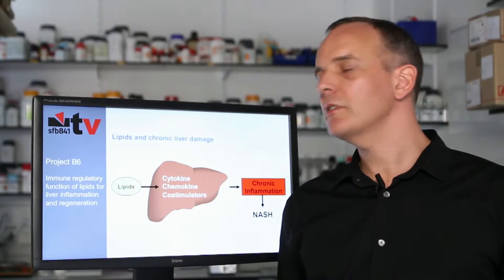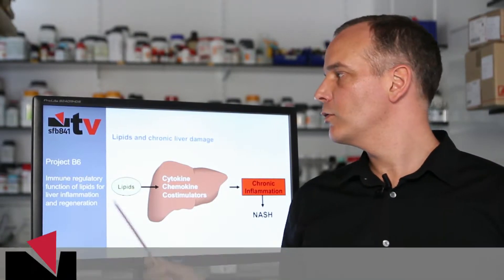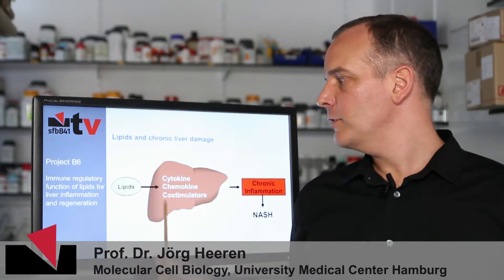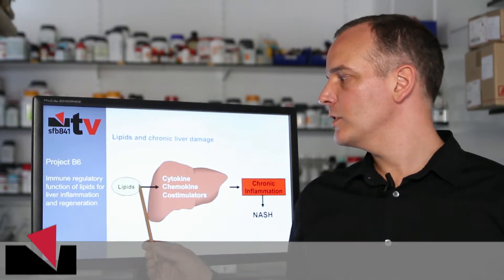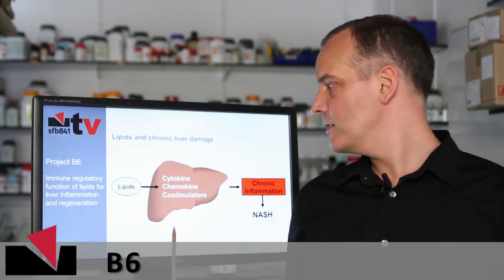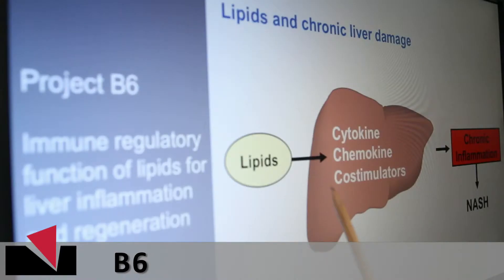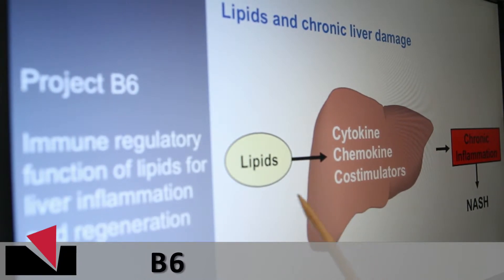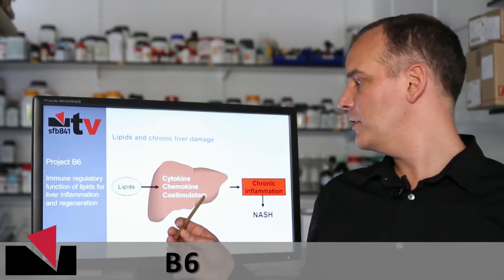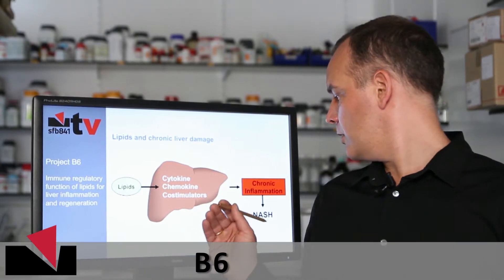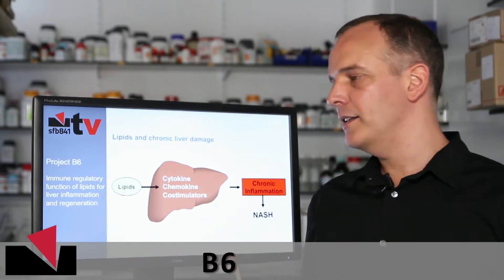In this project, we are interested to understand the role of lipids for the development of chronic liver damage. Therefore, you have to know that lipids are transported by specialized complexes which, when you have high amounts of these complexes, induce the production of factors influencing the development of a chronic inflammatory response causing NASH.